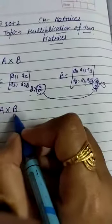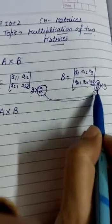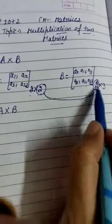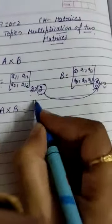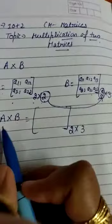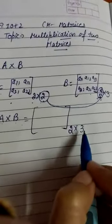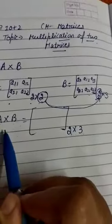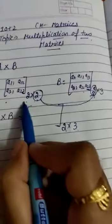When we multiply A×B, the first condition is that the number of columns of the first matrix must equal the number of rows of the second matrix. When we perform the multiplication, those two dimensions cancel out, and the resulting product matrix will have an order of 2×3. So when multiplying a 2×2 matrix A with a 2×3 matrix B, the new matrix A×B will have order 2×3.